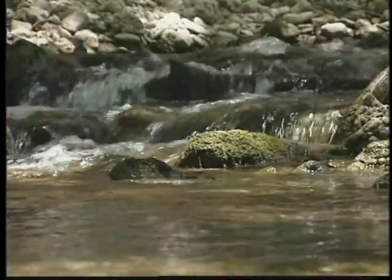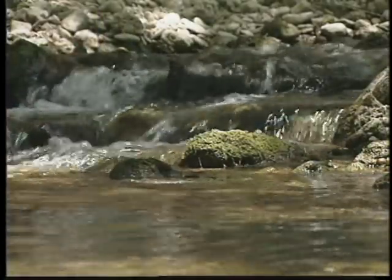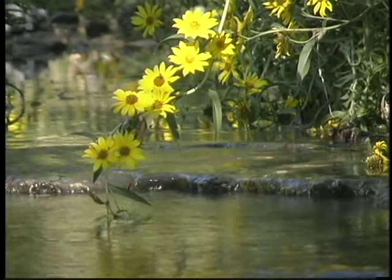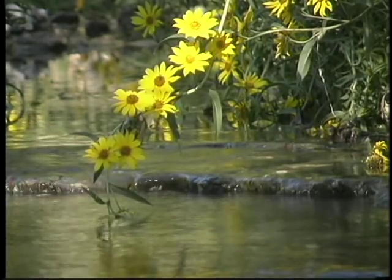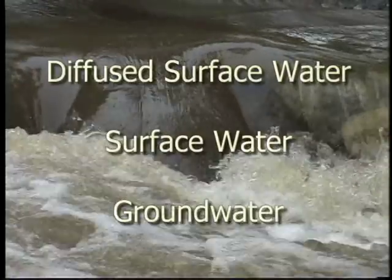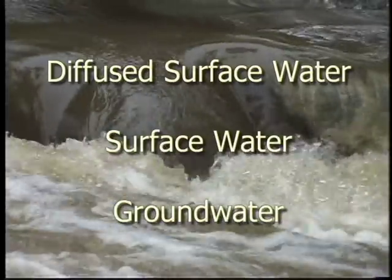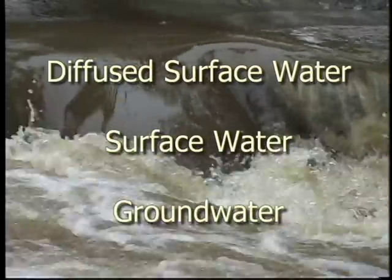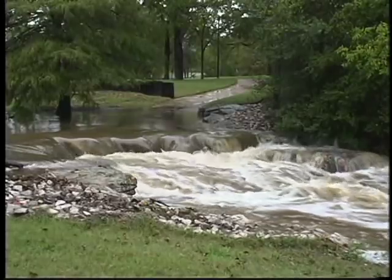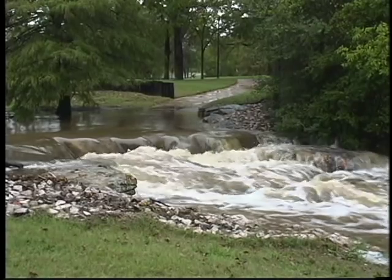Although all water is interconnected, Texas law recognizes three distinct types of water based on their geological container: diffused surface water, surface water, and groundwater. Each type has different rules controlling ownership and management.